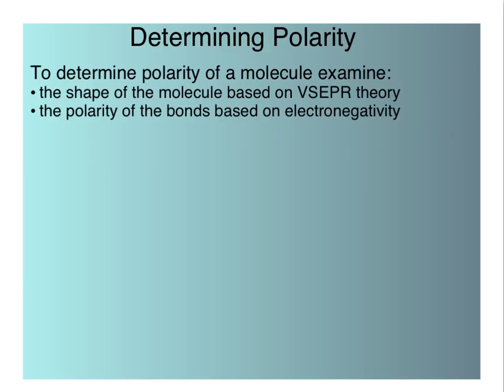To determine if a molecule is polar or nonpolar, we are going to look at the polarity of the bonds based on electronegativity, but we're also going to use VSEPR theory to help us talk about the shape of the molecule to determine if there are two oppositely charged ends to the molecule.